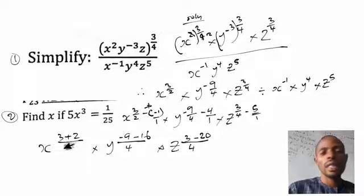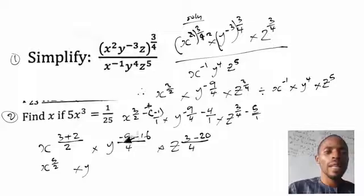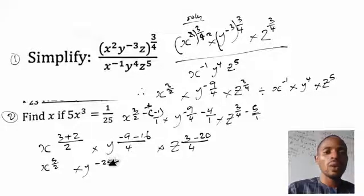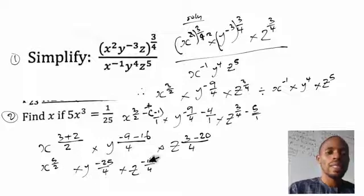Adding the numerators: for s, three plus two equals five, so s raised to power five over two. For y, minus nine minus sixteen equals minus twenty-five, so y raised to power minus twenty-five over four. For z, three minus twenty equals minus seventeen, so z raised to power minus seventeen over four.